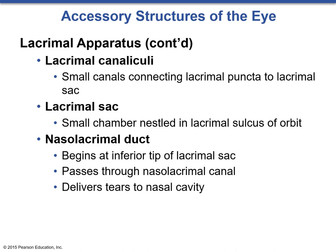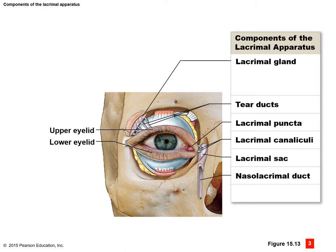Here we can take a look at all of those structures. We start in the upper right corner of the eye where the lacrimal gland is — this is where tears are produced. They then move down the tear ducts and into the actual eye, going across to the corner. It drains via the lacrimal puncta to the lacrimal canaliculi, to the sac, and then to the nasolacrimal duct. This is why your nose runs when you're crying.